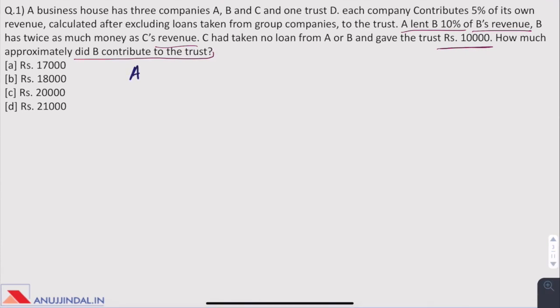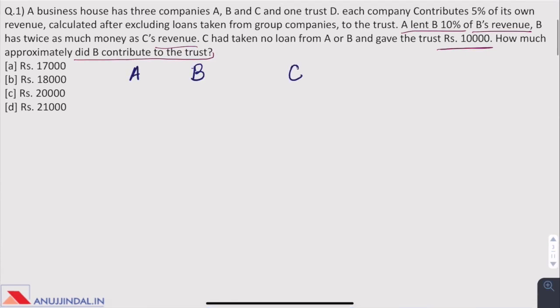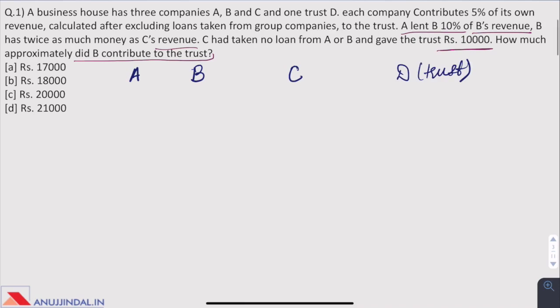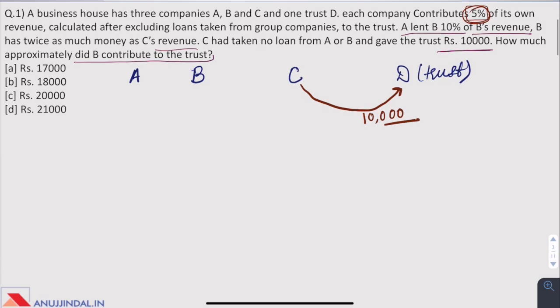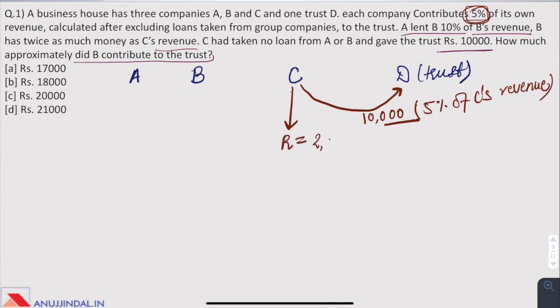There are three companies A, B, C and a trust D. As per the question, C has contributed rupees 10,000 to the trust and it is given that each company contributes 5% of its own revenue to the trust. So 10,000 is 5% of C's revenue. So here we get that revenue of C is 2 lakhs. X into 5 divided by 100 should be equal to 10,000 which gives us X is equal to 2 lakhs.